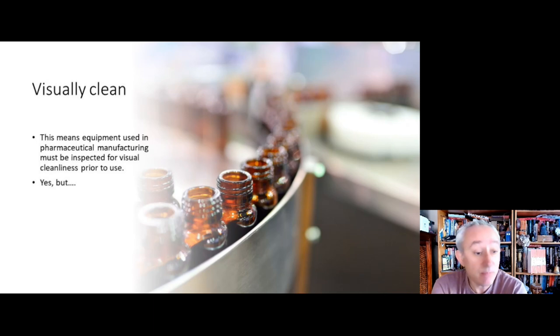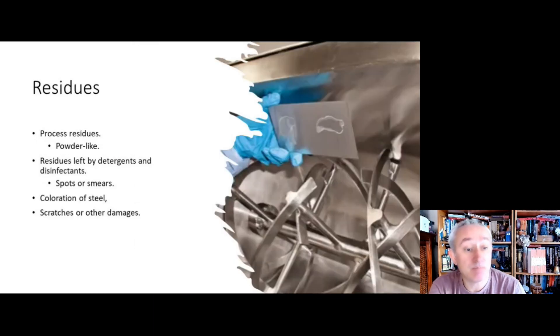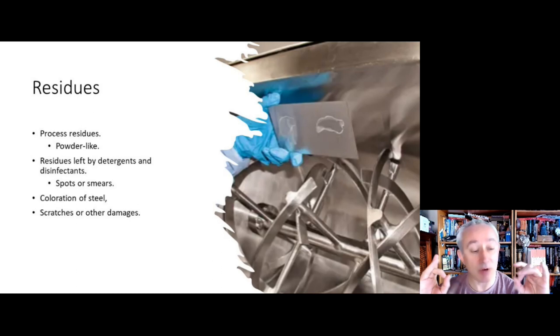What does that actually mean? Well, it means that we're looking for absence of residues. And by residues we're talking about process residues which are often powder-like substances. So if we're using a proteinaceous product, then you'll see bits of dried protein or little powdery specks, things like that where we need to see none of that at all.